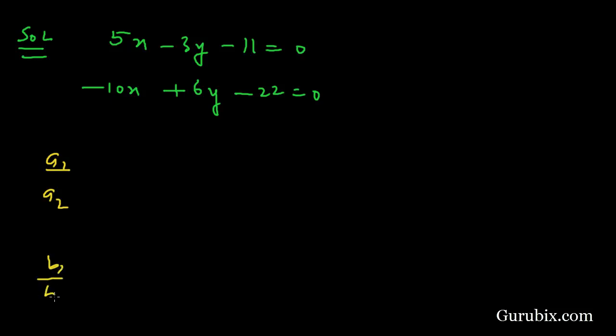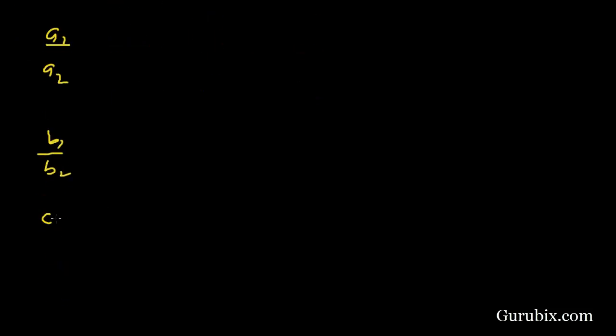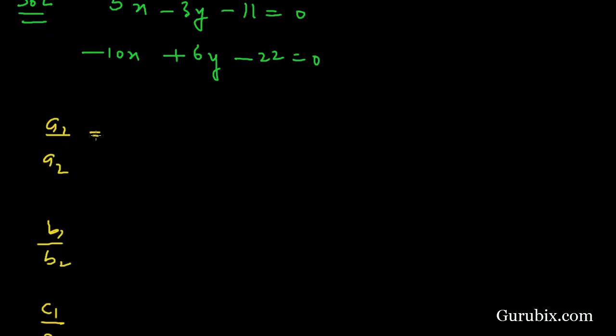A1 over a2 is 5 over negative 10, this is equals to minus 1 over 2. And b1 over b2 is minus 3 over 6, that is also equals to minus 1 over 2.